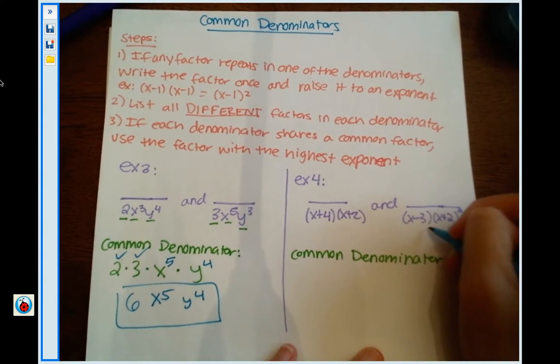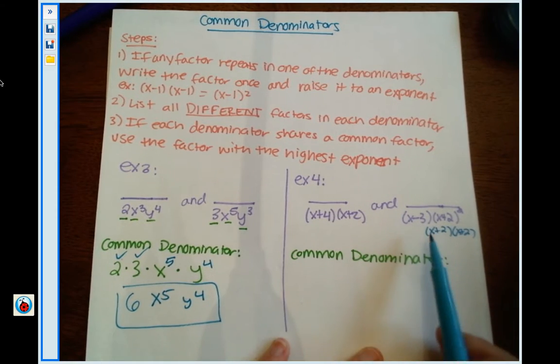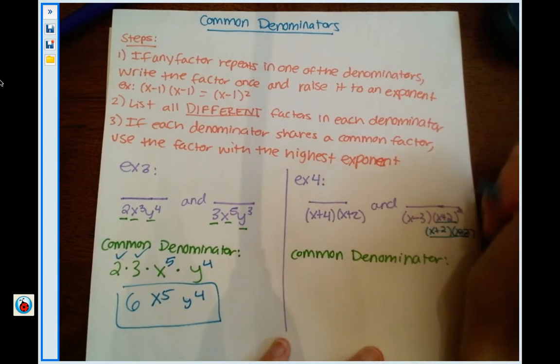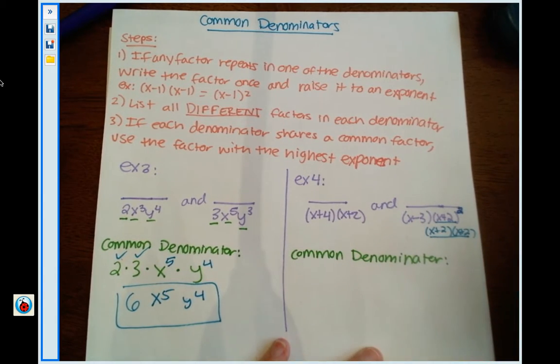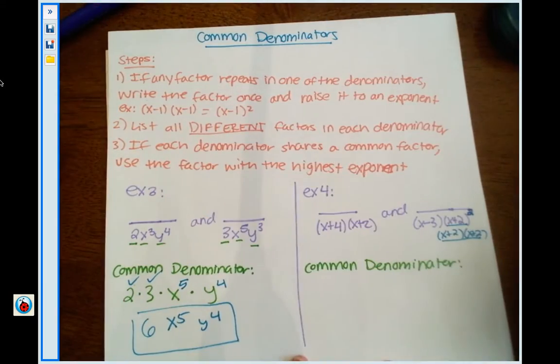Let's say that in this one we would have had x plus 2 times x plus 2. Let's say we factored it and we got x minus 3 times x plus 2 times x plus 2. Well, guess what, we would need to write these as one x plus 2 raised to an exponent of 2. But again, this one kind of already did it for us. But if it was like that, this is what you would do. So step one's done.